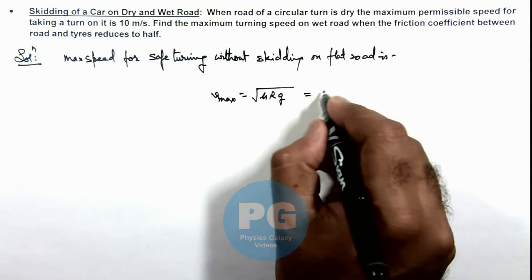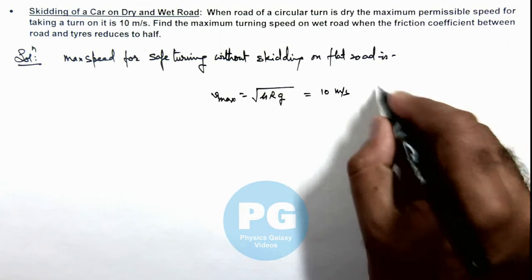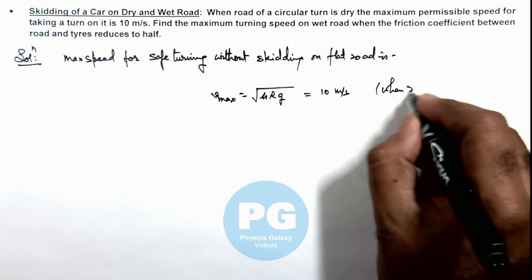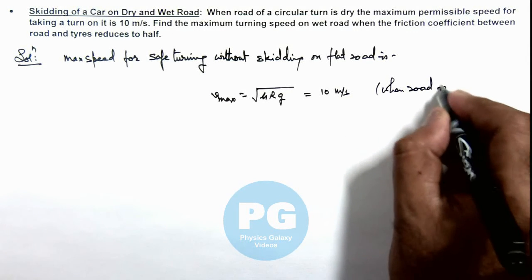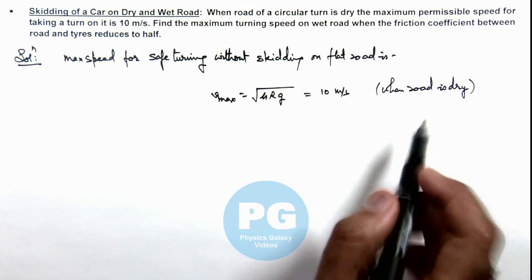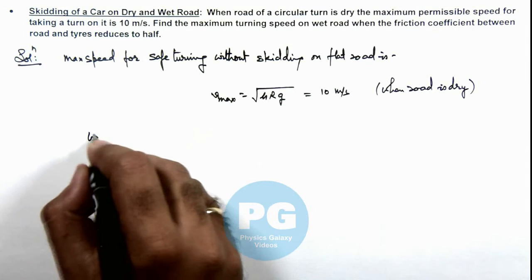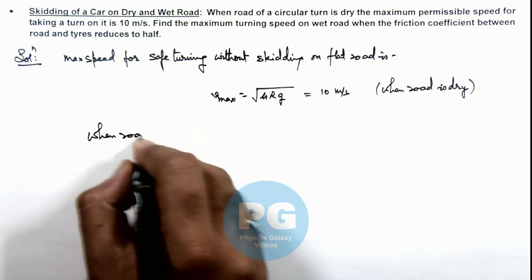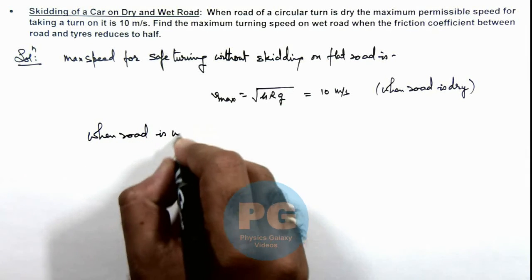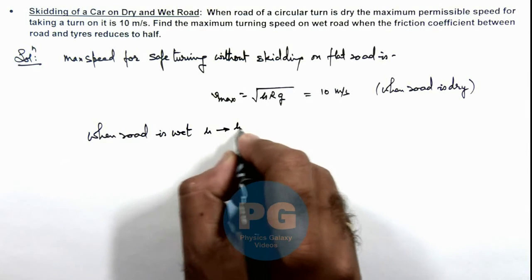We are given that this speed is 10 meters per second when the road is dry. When the road is wet, μ reduces to half, so μ should be replaced with μ/2.